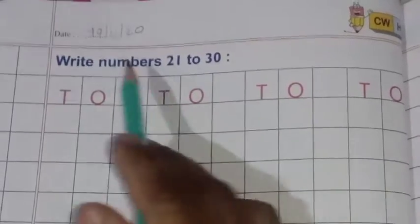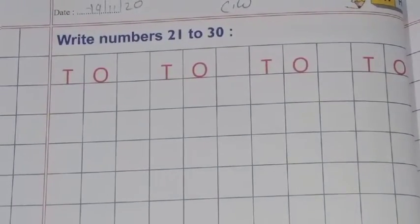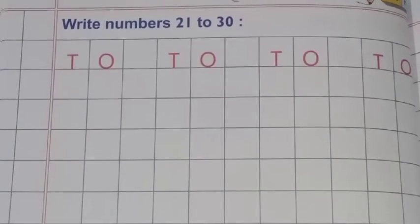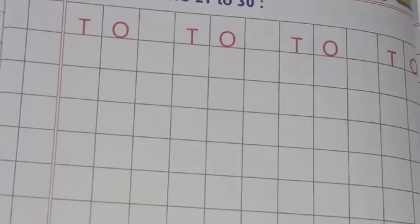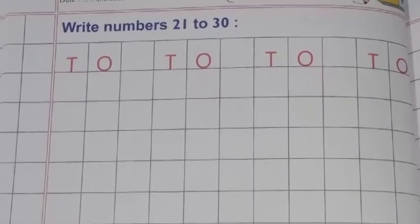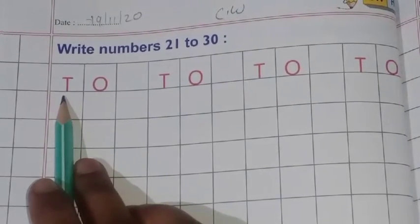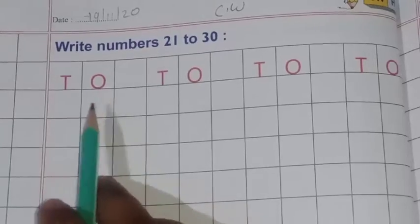So first we will write 19, 11-20, then CW. Write numbers 21 to 30 we have to practice. Before this video we have practiced one number, today we will practice 21 to 30. Let's start. Here is T O, T means tens and O means ones, okay?